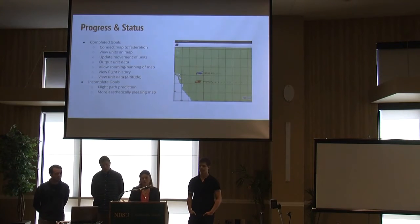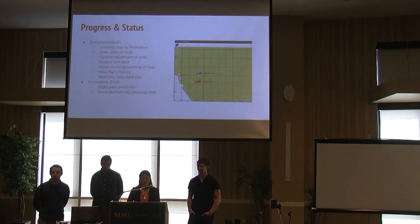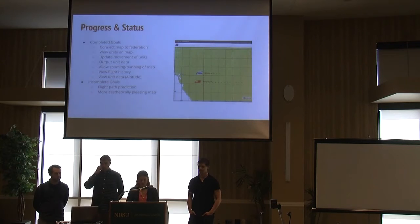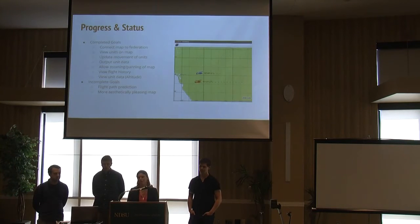To sum up our progress over the past few months: we successfully connected the map to the Federation, can view units on the map, can update the movement of units, each unit outputs its information, there is zooming and panning on the map, we can view flight history, and view unit information like altitude. Goals we did not reach include flight path prediction — that's something future teams can pursue — and also a more aesthetically pleasing map. As you'll see in our demo, it's very simple and could definitely use some updating.